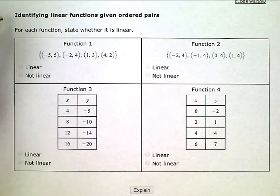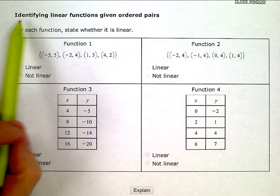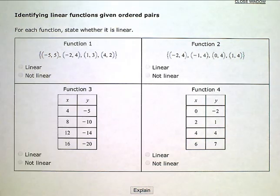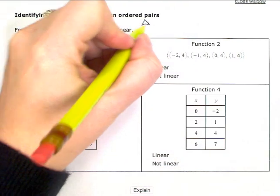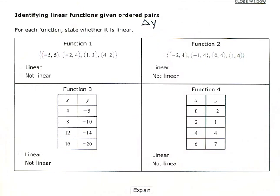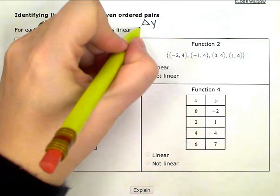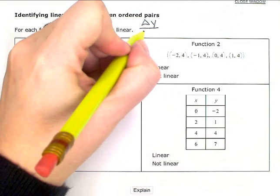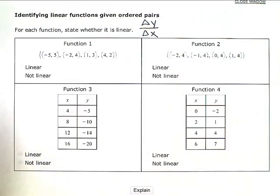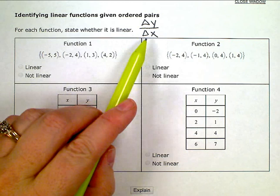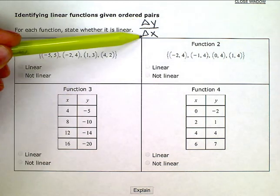Identifying linear functions given ordered pairs. For each function, state whether it is linear. Okay, so what I'm looking for here is if my change in y, and I'm going to use the delta y notation there, my change in y is constant over my change in x. And I use delta x. So if my change in y is constant over my change in x.